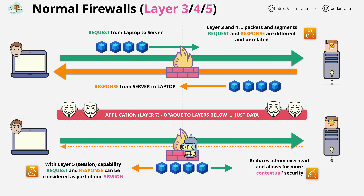They have no visibility into layer 7 — for example, HTTP. So they can't see headers or any of the other data transferred over HTTP. To them, the layer 7 content is opaque. A cat image is the same as a dog image, is the same as some malware. This is a significant limitation, and it exposes the things we're protecting to a wide range of attacks.